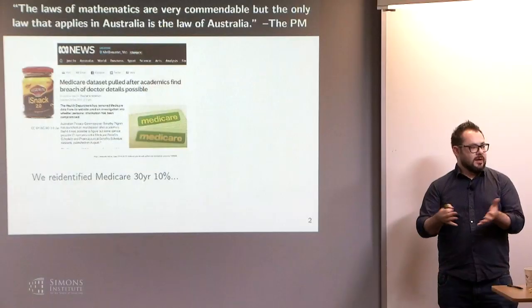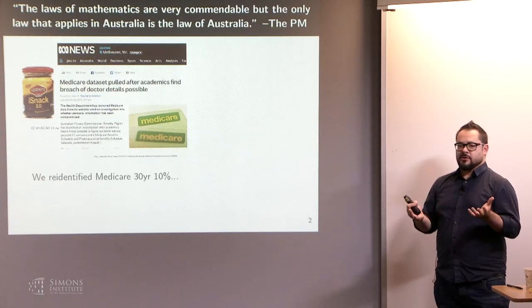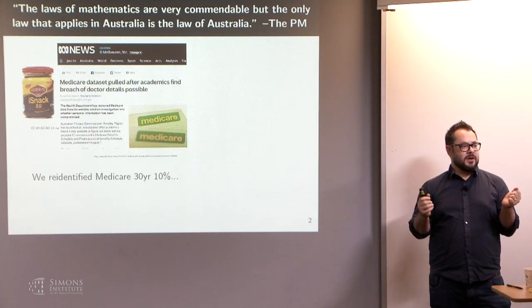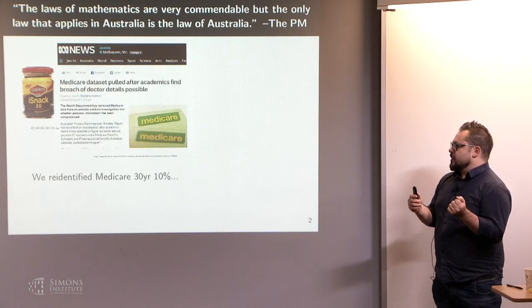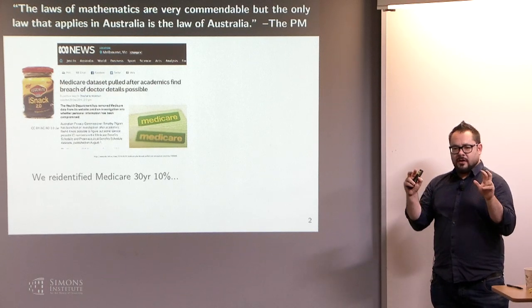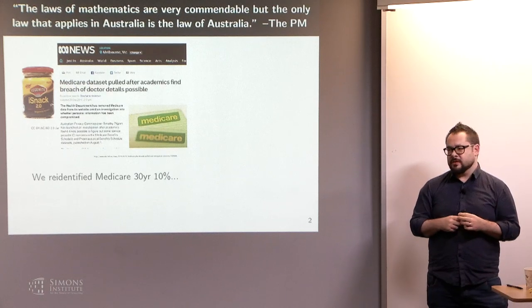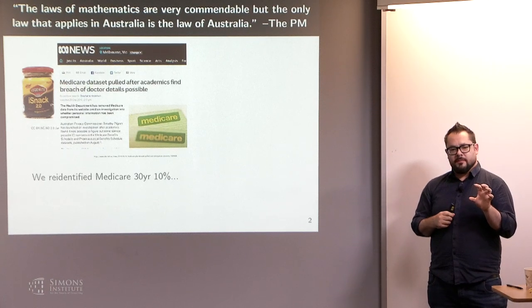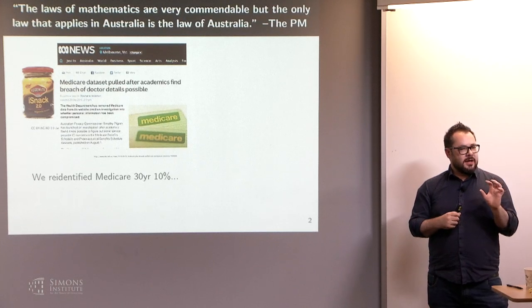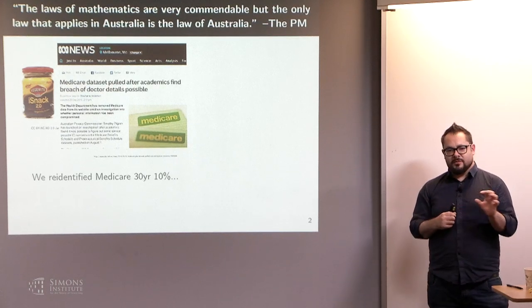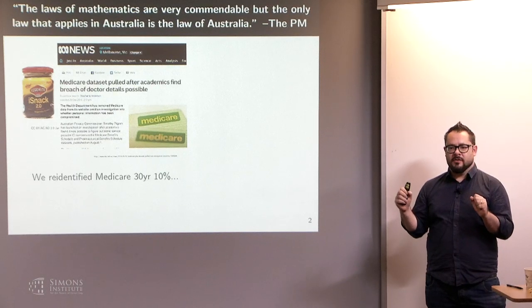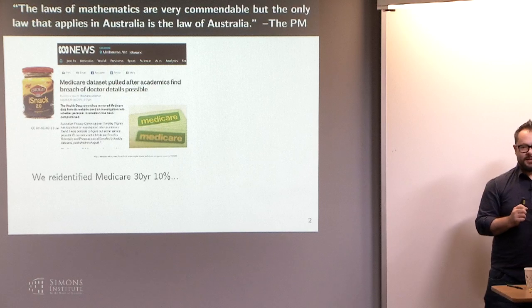This data is extremely sensitive. It covers what procedures you have, what kind of appointments you have with doctors, how doctors treat their patients — because you can track a doctor through this dataset — and what kind of prescriptions you have, for some people their entire lifetime. They had tried to anonymize the data: they had perturbed dates of billing records, and they had passed doctor IDs through one-way non-invertible hash functions. The dataset was just put online as a file — you didn't need to register to get it.